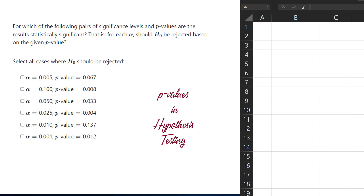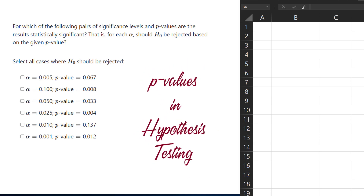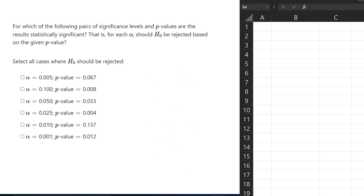In this video, I'll be showing how to use p-values in hypothesis testing. The rule basically states that if the p-value is smaller than a specified significance level alpha, the result is significant and the null hypothesis should be rejected.